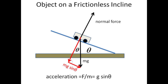Gravity may be resolved into two components: a component counteracting the normal force, and a component accelerating the object down the hill. If the plane makes an angle theta with respect to the horizontal, then the component of gravity pulling down the hill is mg sine theta. The expected acceleration is thus g sine theta.